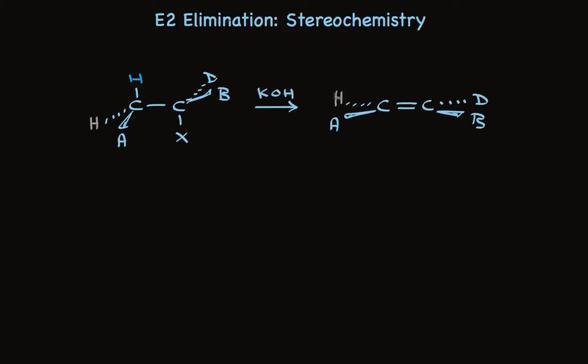But what about when we lose the tan hydrogen? To lose the tan hydrogen in this elimination, it must rotate up here to assume the anti-coplanar position. That means this blue hydrogen rotates down this way, and A rotates over there.